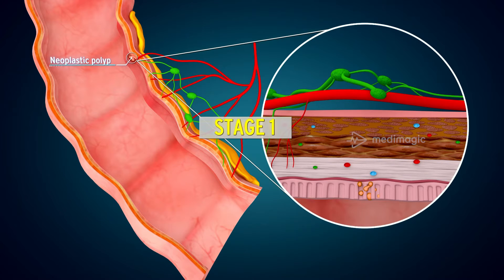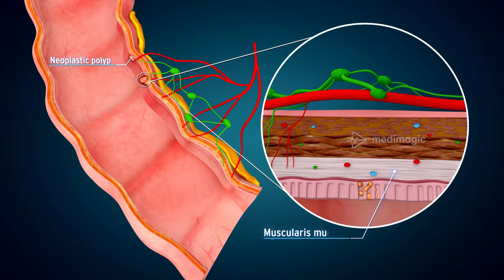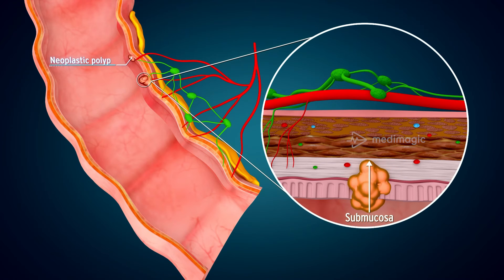Stage 1: In this stage, tumor cells invade the muscularis mucosa and further proliferate into the submucosal layer. Now they appear as small adenomatous and serrated polyps.